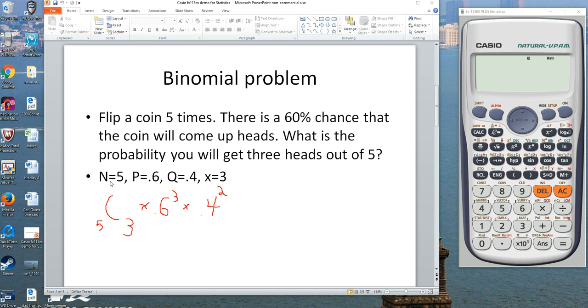This boiled down to its numbers. N is five, probability of success is 0.6, probability of failure is 0.4, and you're looking for three successes.